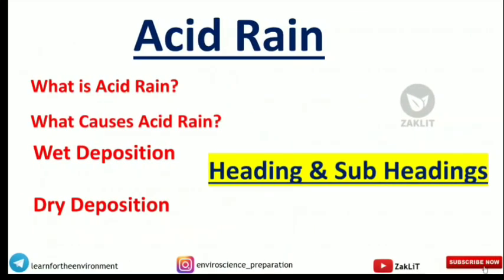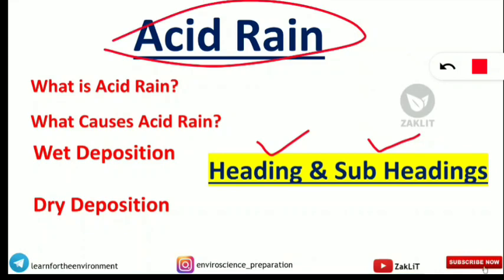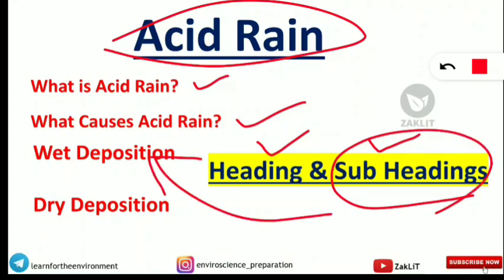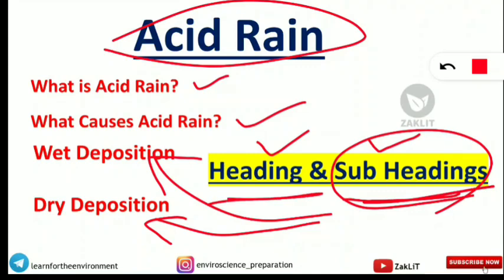Now let's know how to write an essay type or paragraph type question. You have to use headings and subheadings in essay type or paragraph type writing. For example, if the question asks 'write a note on acid rain,' the first heading will be 'What is acid rain?', the next heading will be 'What causes acid rain?', then 'Chemical reaction behind acid rain.' Under that, the heading 'Types of deposition of acid rain' with subheadings 'wet deposition' and 'dry deposition.' This is the basic heading and subheading format. But how to get more marks — how you will be different from others — I will tell you.